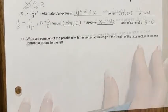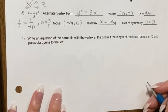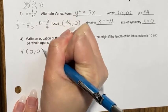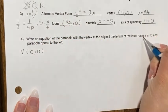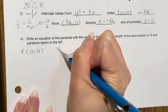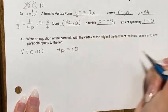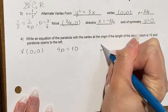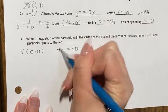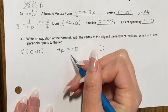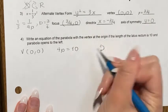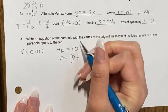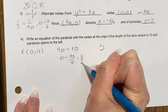Example 4: write the equation of a parabola with vertex at the origin, latus rectum length of 10, opening to the left. The latus rectum length = |4p| = 10. Since it opens left, p is negative, so p = −10/4 = −5/2.